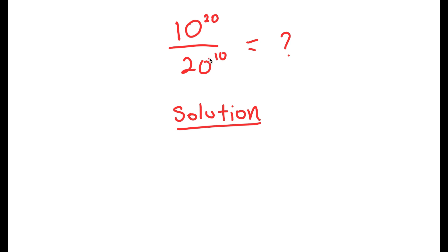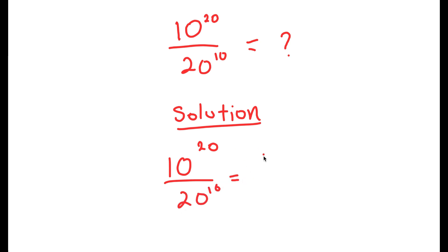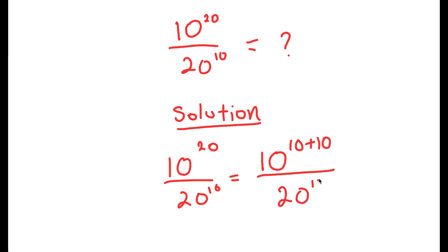For my solution, I'm first going to rewrite this as 10 to the power of 20 over 20 to the power of 10, and then rewrite the exponent as 10 to the power of 10 plus 10 over 20 to the power of 10. I rewrote my exponent as 10 plus 10.